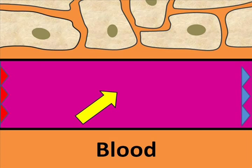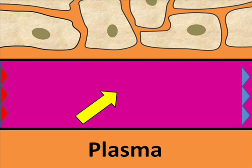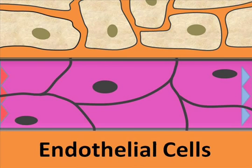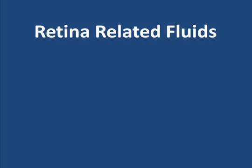The blood and its fluid component, called plasma, is separated from the body tissue by the walls of the capillary, which are made up of endothelial cells.